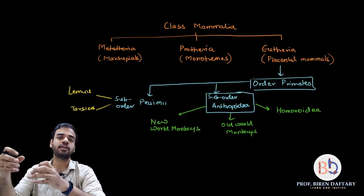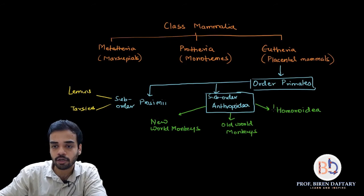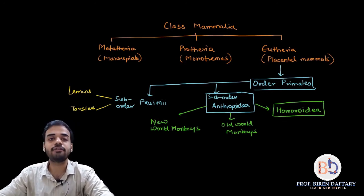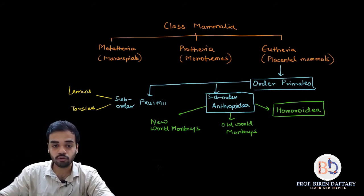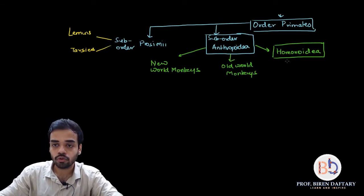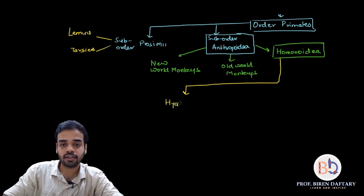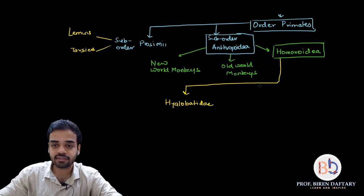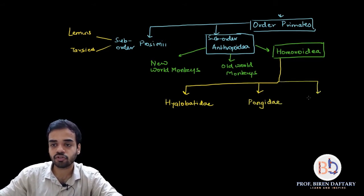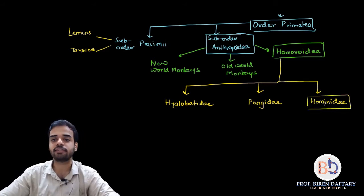Hominoidea is very important because this group consists of apes and man. Hominoidea is further divided into three parts: Hyalobatidae, Pongidae, and Hominidae. Hominidae is circled as especially important because all humans are placed in this group.